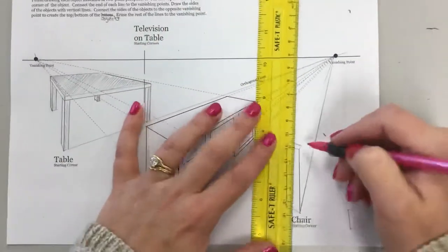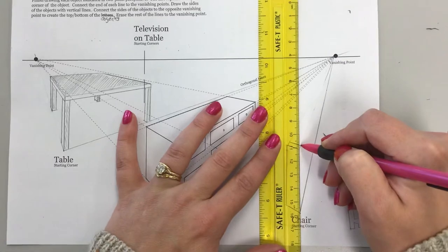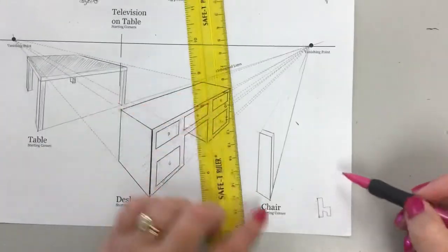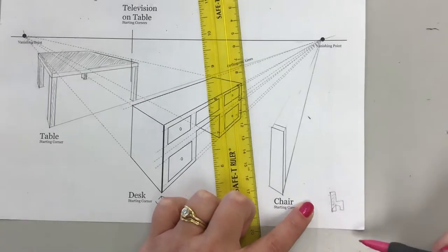I'm going to come straight down again. Like I said, I'm doing a very basic chair here. So I have this line, scoot it over, come straight down. So now I've made this part of my chair.